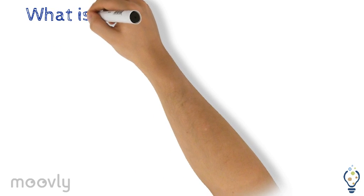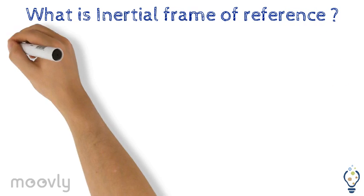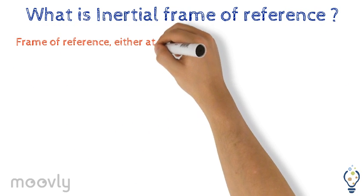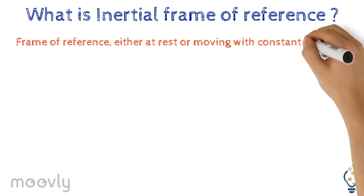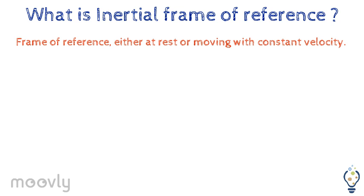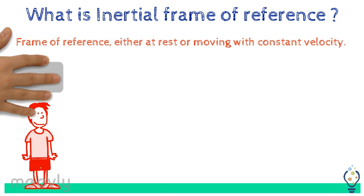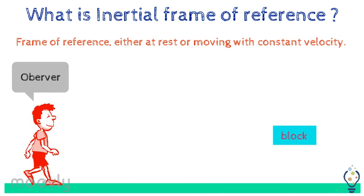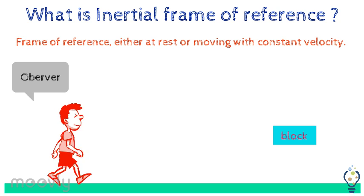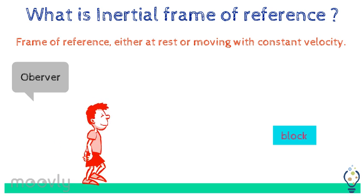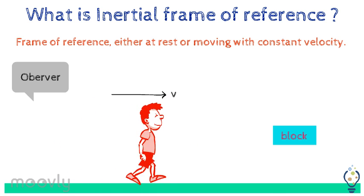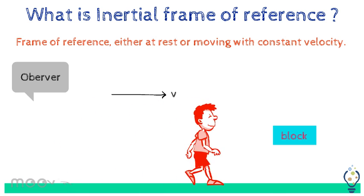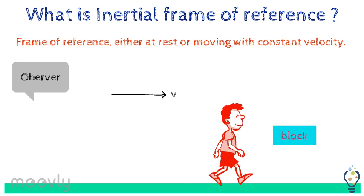What is an inertial frame of reference? It is a frame of reference either at rest or moving with constant velocity. Consider a boy standing on the ground observing a block. Also, if he is moving with constant velocity v, then the frame of reference is said to be an inertial frame of reference.